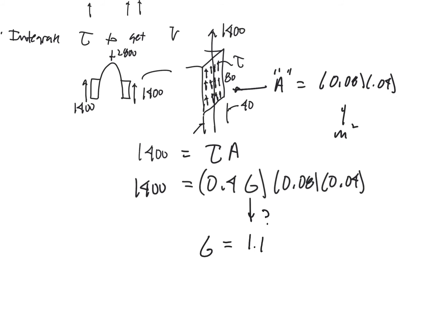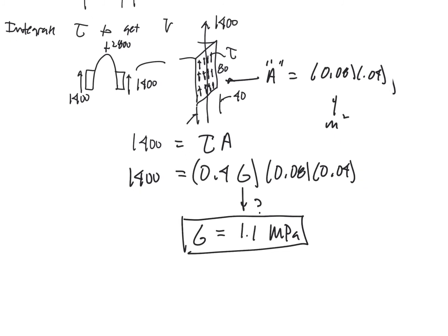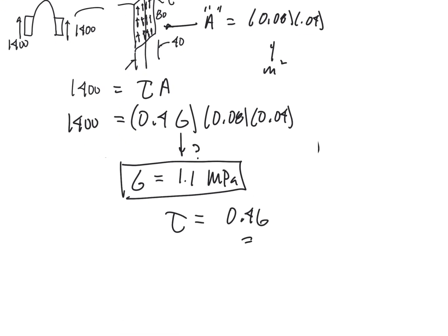We just do the arithmetic and we find that G is equal to 1.1 MPa like so. And then if we go ahead and do that, then we find that the shear stress, so the tau, we remember that was the 0.4G, and that turns out to be equal to 437.5 kPa.